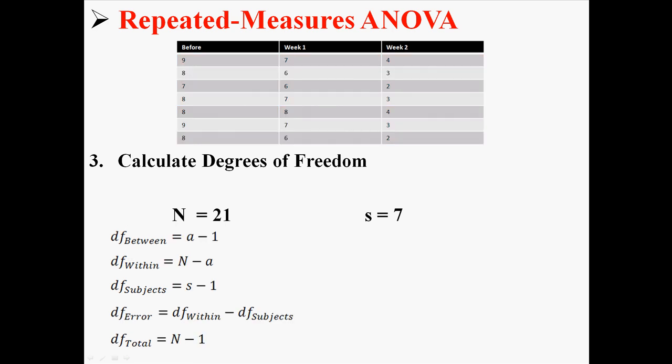So these are the equations for degrees of freedom. We have N, A, S, and 1. A refers to the number of levels you have. So in this case, A is 3. Your teacher might have it as K or something like that. But A and K are the same thing. In this case, it's 3.